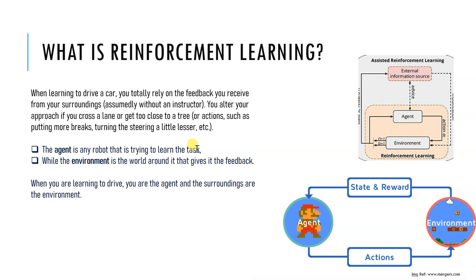In the beginning, a baby does not know how to walk and takes random actions such as crawling or standing up. However, when the baby takes a step and moves forward, they receive a reward in the form of positive feedback from their parents. This encourages the baby to take more steps and eventually learn to walk. Similarly, in reinforcement learning, the agent takes random actions in an environment and receives a reward or penalty. If the action leads to a positive outcome, it receives a reward and learns to take similar actions. If it leads to a negative outcome, it receives a penalty and learns to avoid those actions.